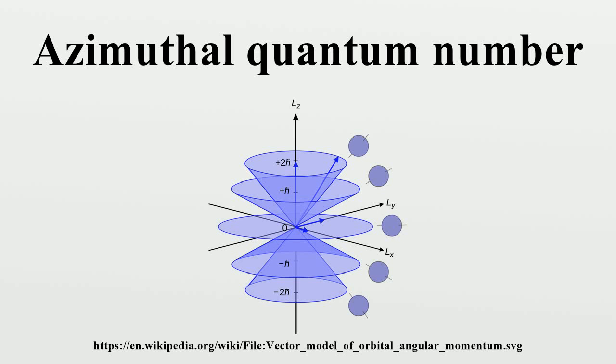The azimuthal quantum number is a quantum number for an atomic orbital that determines its orbital angular momentum and describes the shape of the orbital.